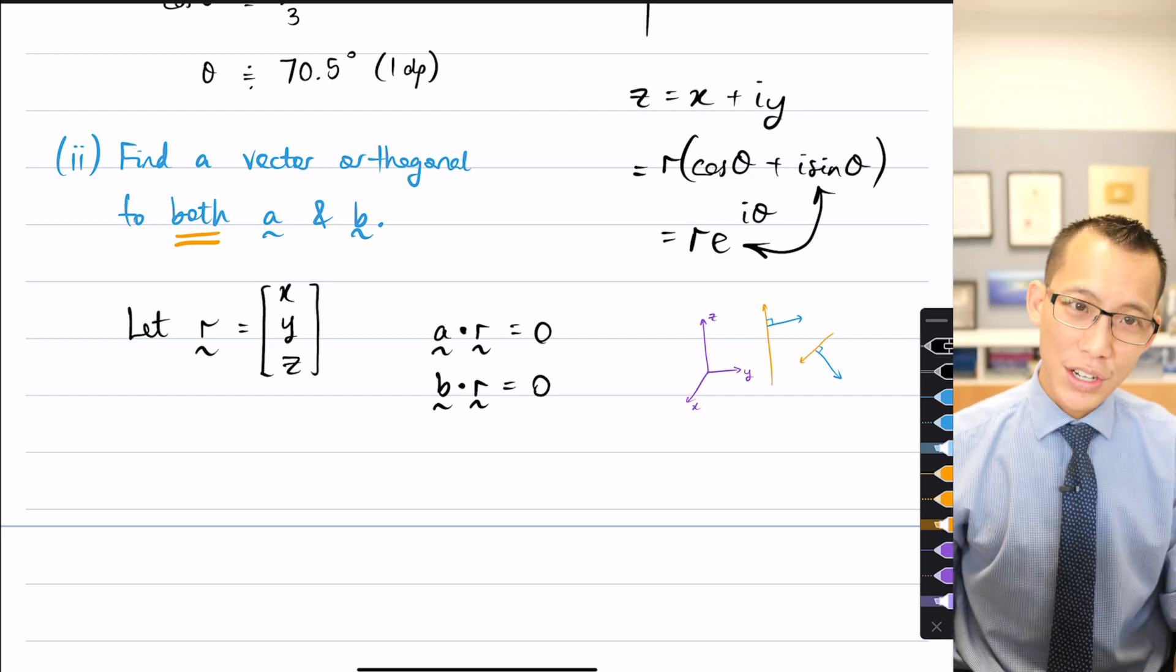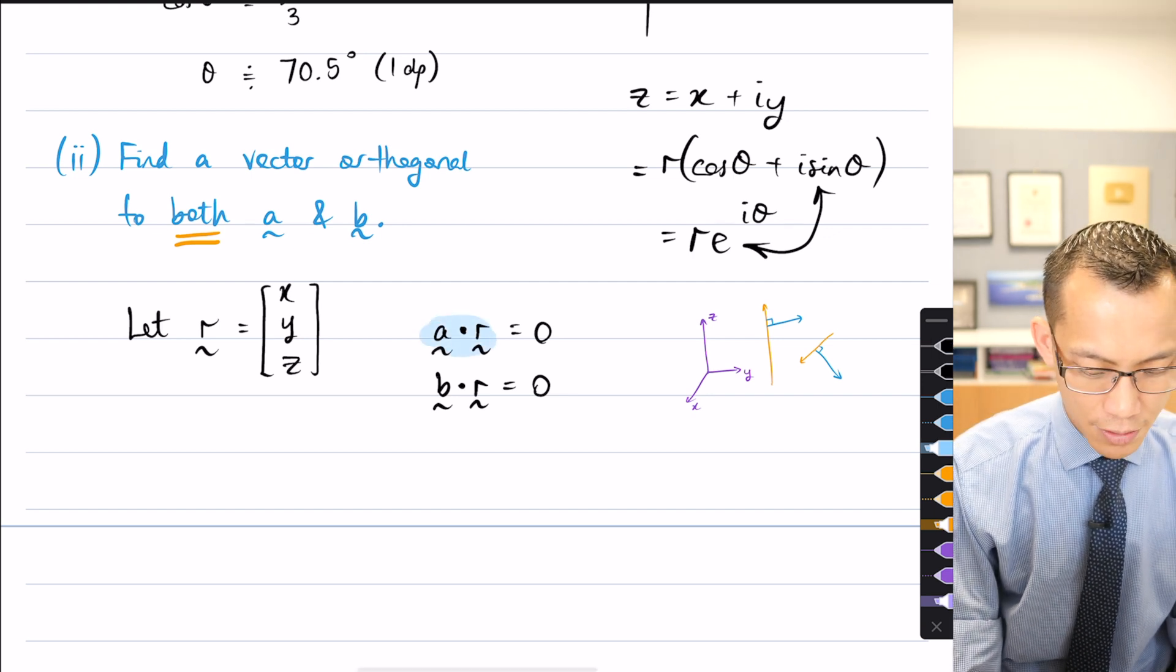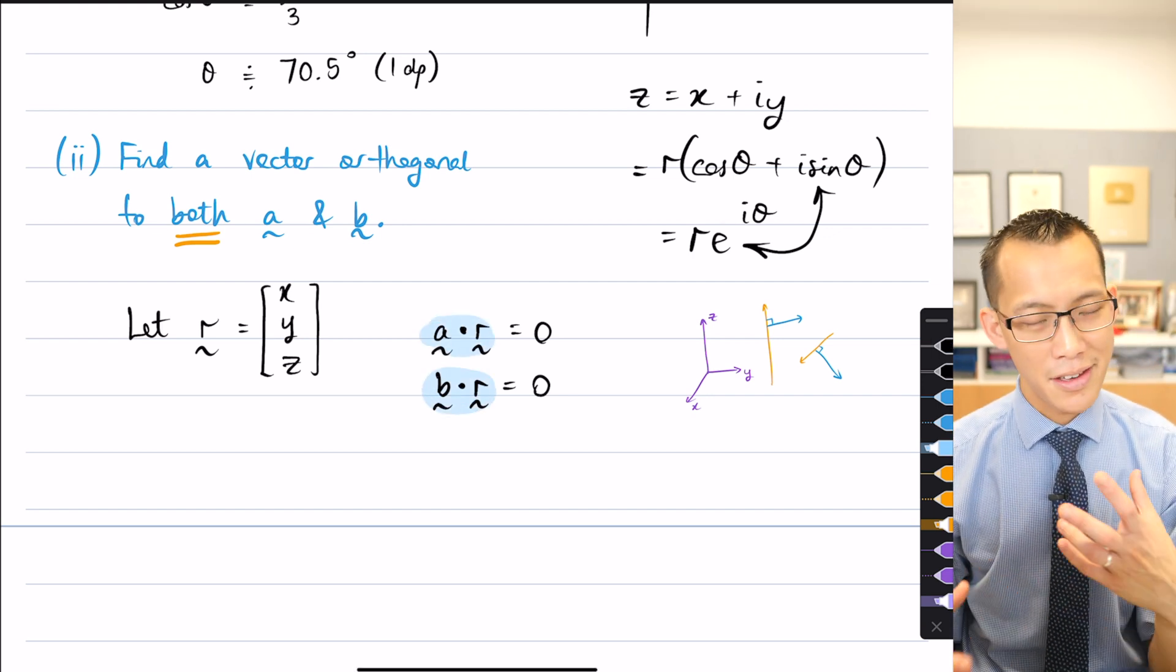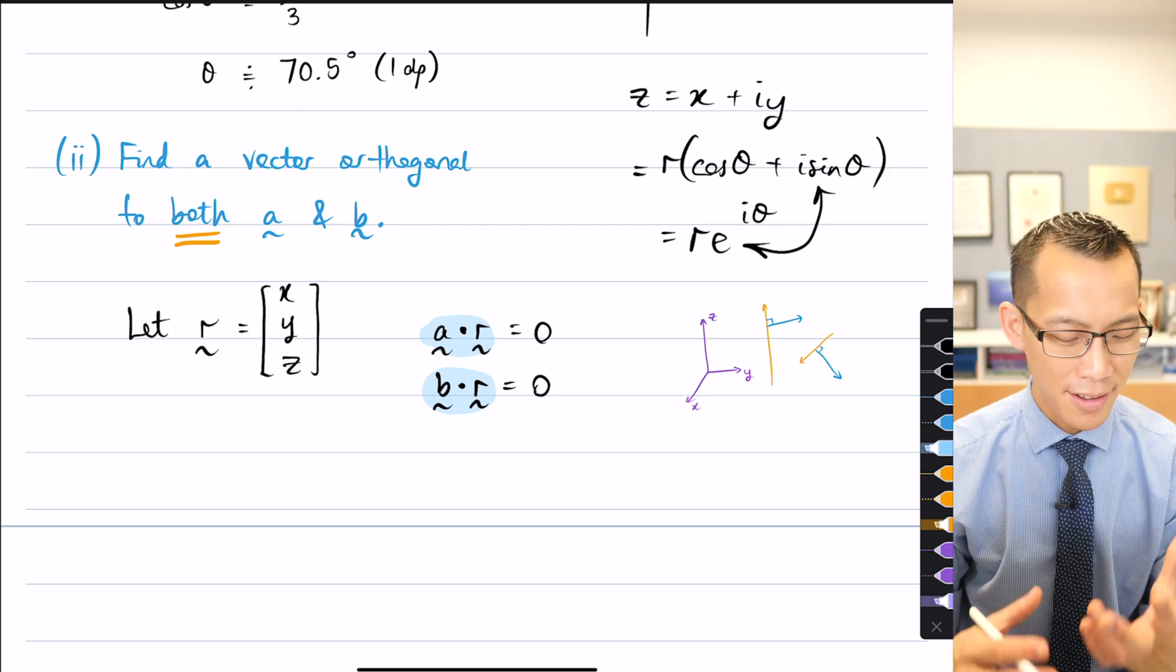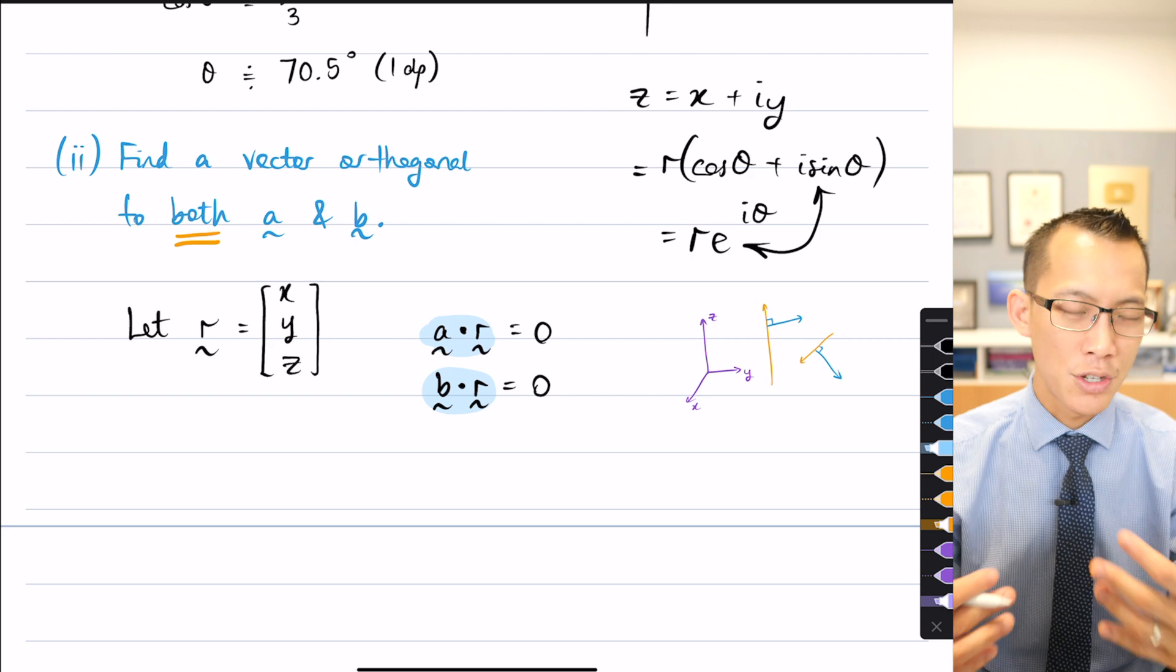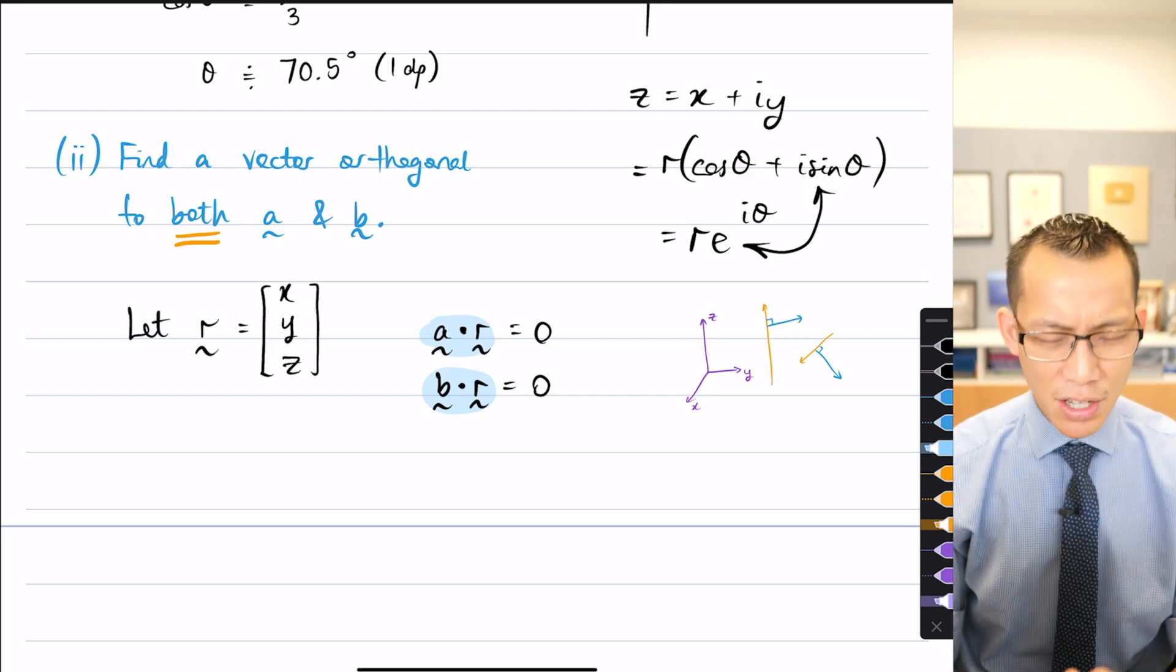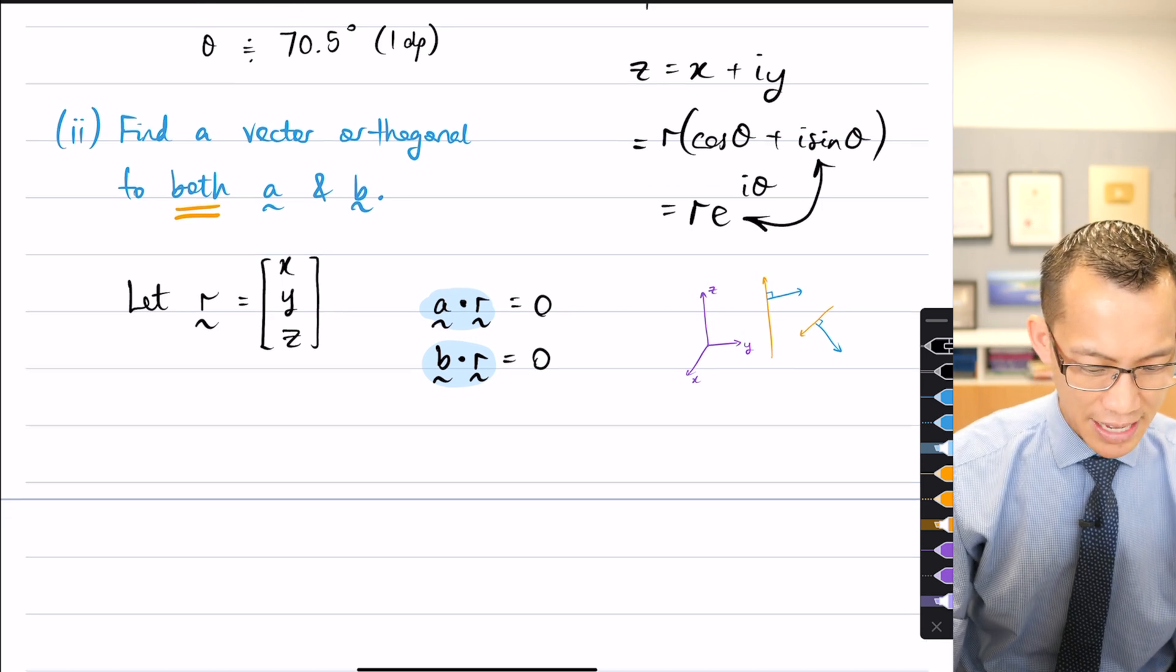Now, what this is going to give us is if you have a look at the left-hand side in each of these cases, right? These two things using the component formula for the dot product, it's just going to give us two equations, a pair of equations with X's and Y's and Z's. Can we just go ahead? Can we write those two equations out that come from here?